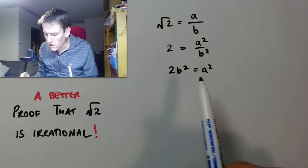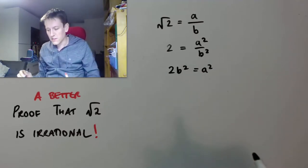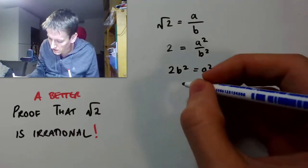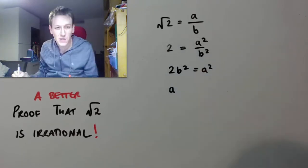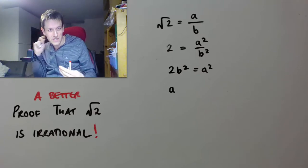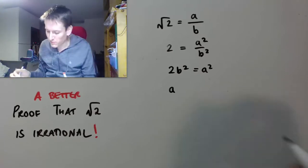So, I've got 2 times b squared equals a squared, and we now just want to think about the structure of these numbers. Okay, so I'm going to do this by example, but you could easily, once you've done this example, write this down in general.